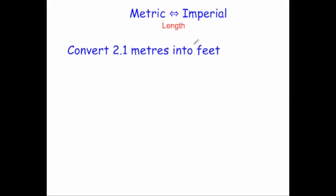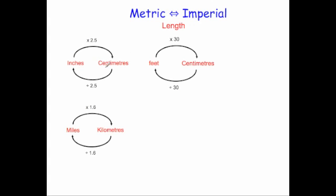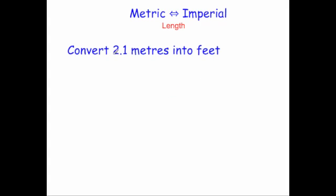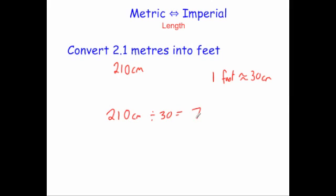Convert 2.1 meters into feet. Looking at the conversions we have inches to centimeters, feet to centimeters, and miles to kilometers. The feet-to-centimeters conversion is the one we'll use. First, 2.1 meters times 100 equals 210 centimeters. Since 1 foot is approximately equal to 30 centimeters, to go from centimeters into feet we divide by 30. So 210 divided by 30 equals 7 foot. That means 2.1 meters is approximately equal to 7 foot.